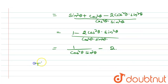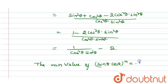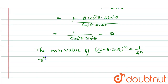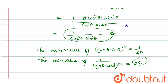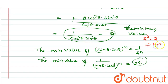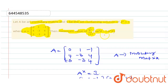The minimum value of (sinθ · cosθ)^n is (1/2)^n, so the minimum value of 1/(sinθ · cosθ)^2 is 2² = 4. Therefore, the minimum value of the entire expression is 4 - 2 = 2. After solving this question, we get the minimum value equals 2.